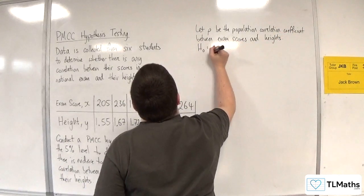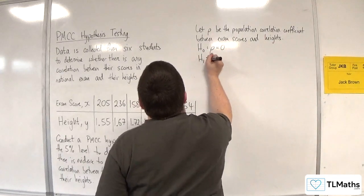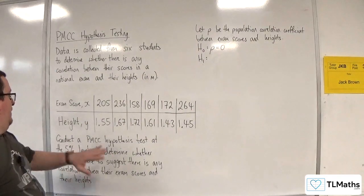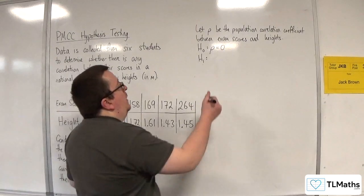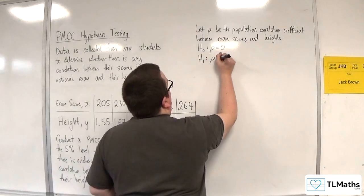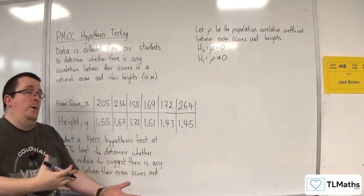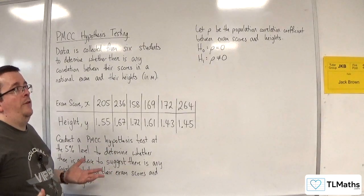The null hypothesis is always the same, so that's rho is zero. The alternative hypothesis this time, because we're determining whether there is any correlation, that means we're looking at a two-tail test and this has got to be not equal to zero. We don't know whether it's going to be positive or negative, we're just trying to determine whether there is any correlation.